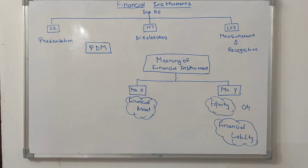Most of the time people get confused with the three of them, so I have created one acronym: PDM — P for Presentation, D for Disclosures, and M for Measurement — so that you can remember them in sequence.